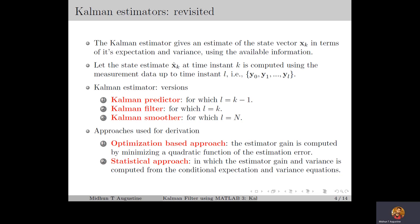For Kalman estimators also, we can have these three versions: the Kalman predictor for which l is equal to k minus 1, the Kalman filter for which l is equal to k, and the Kalman smoother for which l is equal to n, where n is the time horizon. In this lecture, we will be mainly discussing the Kalman predictor, and the Kalman filter and Kalman smoother will be discussed in upcoming lectures.